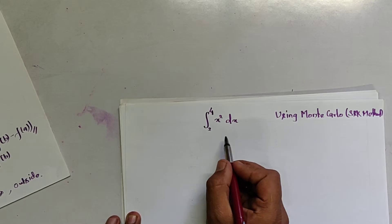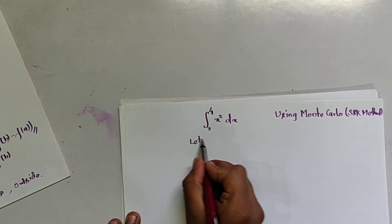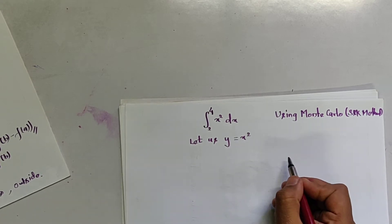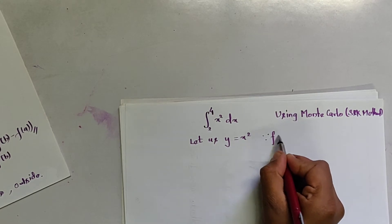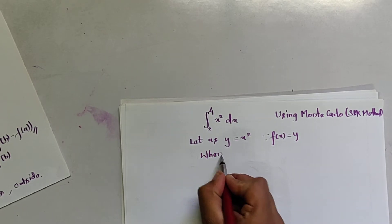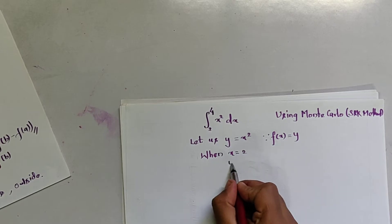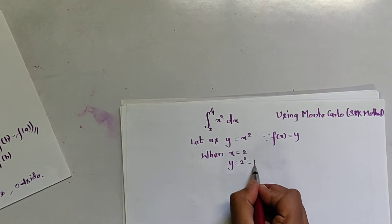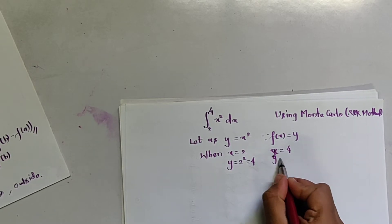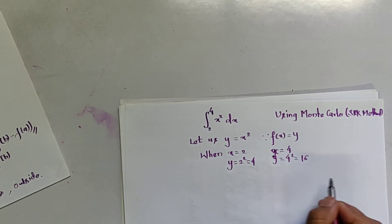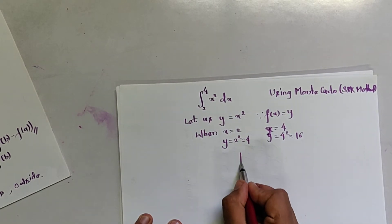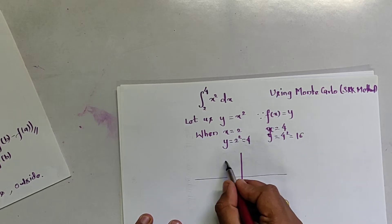This is the given integral. By the process, let us consider y equals x squared, that is f(x). So y equals f(x). We calculate the upper and lower boundary for y. When x equals 2, y is 2 squared, which is 4. Similarly, when x equals 4, y is 4 squared, which is 16. So the limit for y is 4 and 16. Since y equals x squared, it is a parabola.